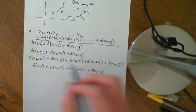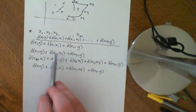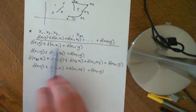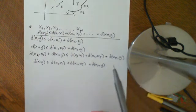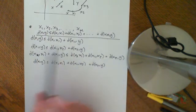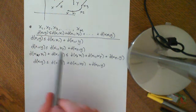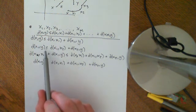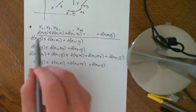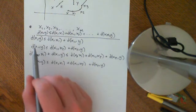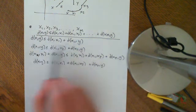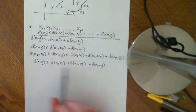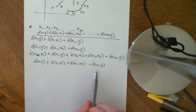Just to recap: I took that second inequality and added the distance between x and x1 to both sides. Because the real numbers are an ordered field, the inequality still holds when you add a number to both sides. Then I used the transitive property of the order to say that if this sum is less than or equal to that sum, and that is less than or equal to this, it implies this is less than or equal to this. So what I've done is extended the triangle inequality to two intermediate points between x and y.